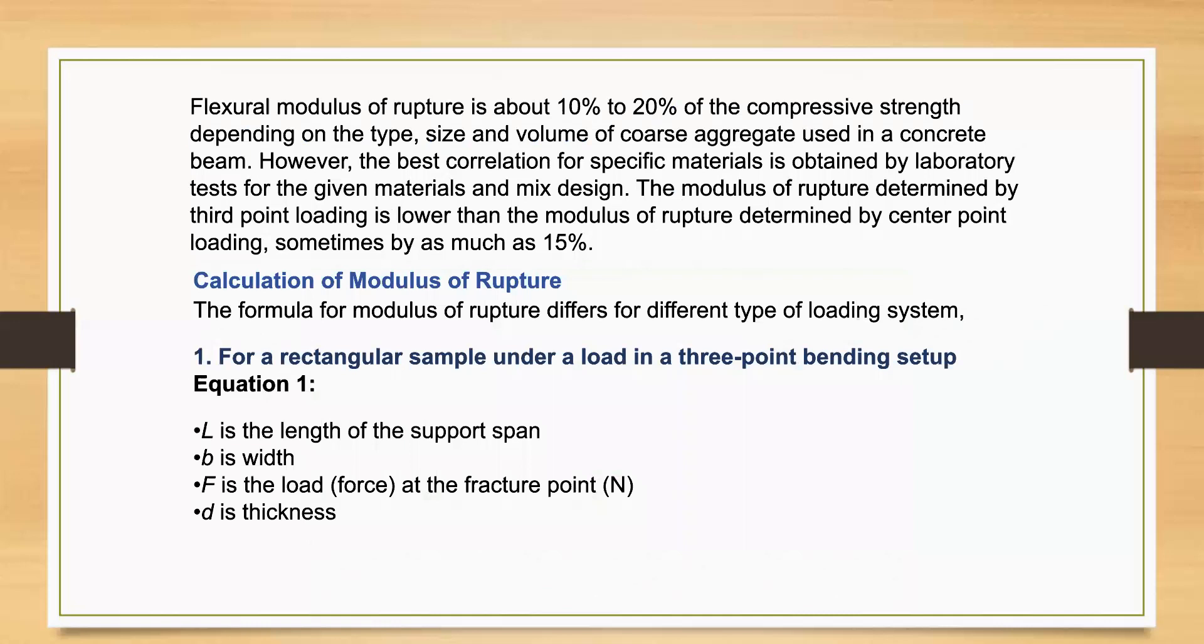The flexural modulus of rupture is about 10% to 20% of the compressive strength depending on the type, size, and volume of coarse aggregate used in a concrete beam. However, the best correlation for specific materials is obtained by laboratory tests for the given materials and mix design.